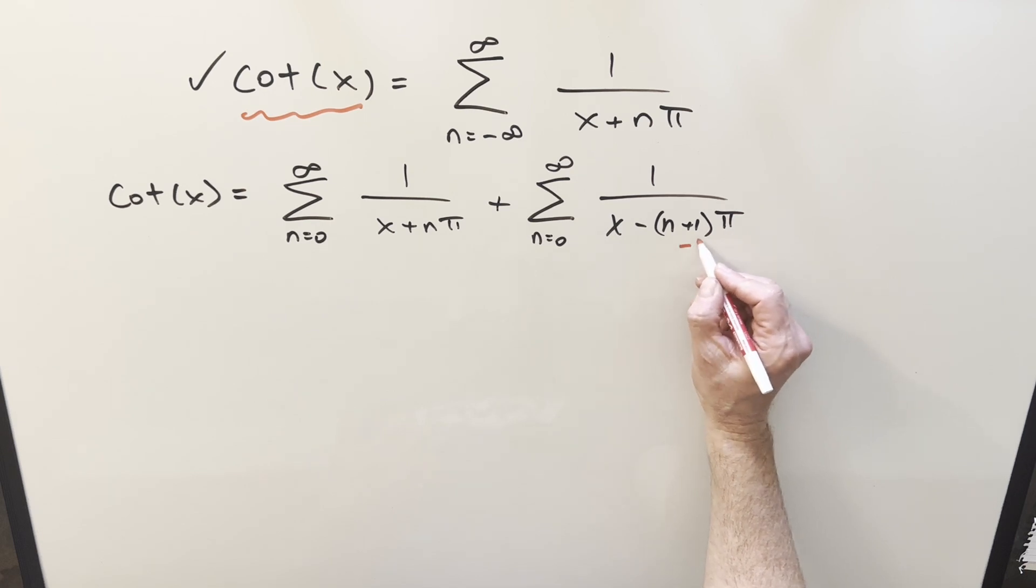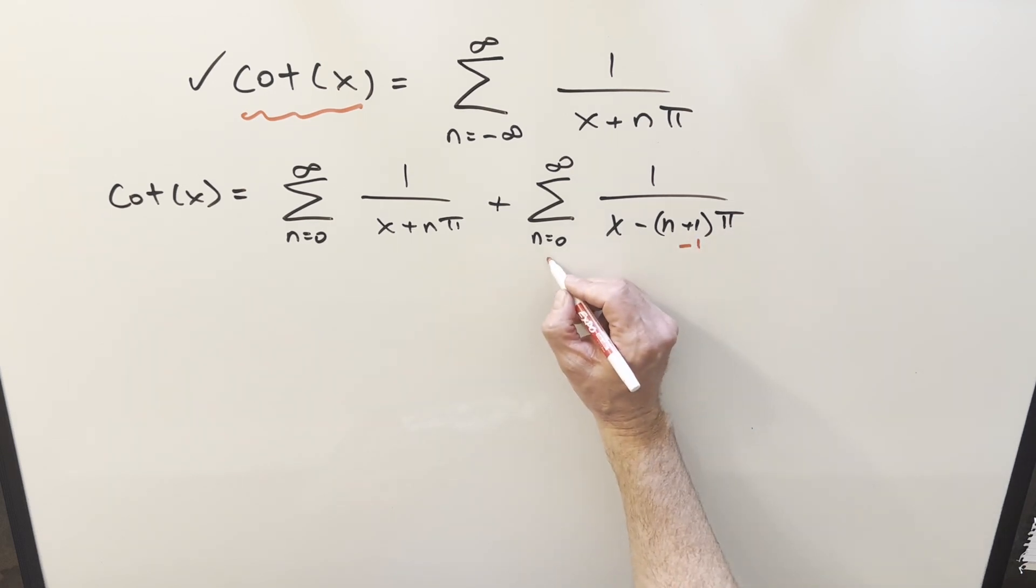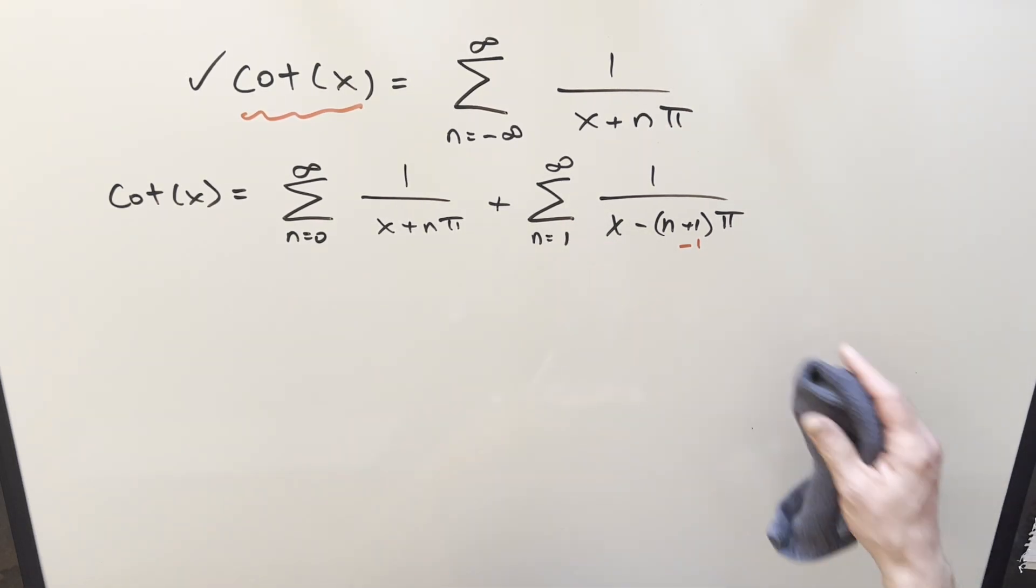Do minus 1 here. I just need to add 1 on here. So that way, the lower index here is going to become 1. And then this thing over here is just going to become n pi.